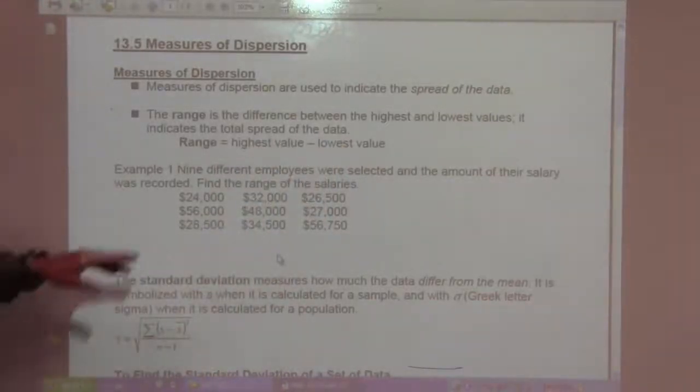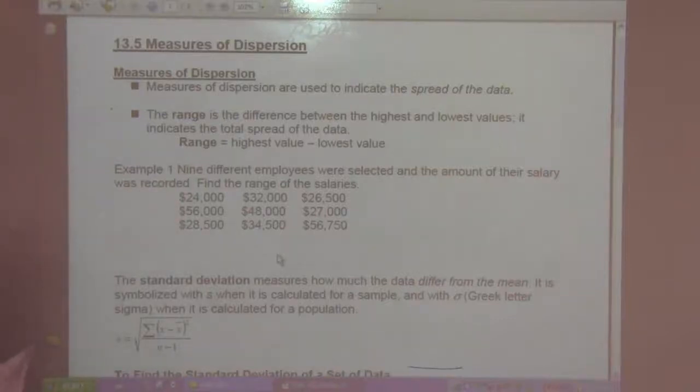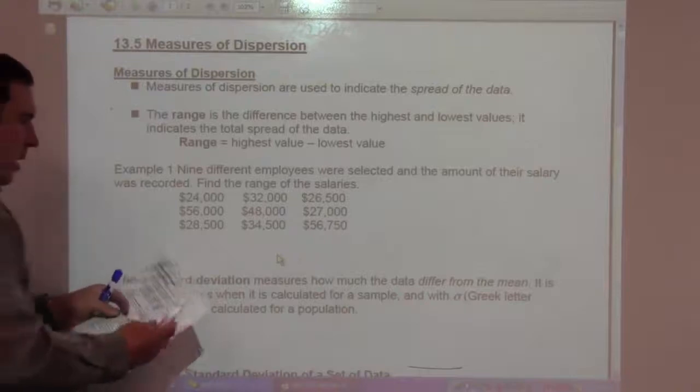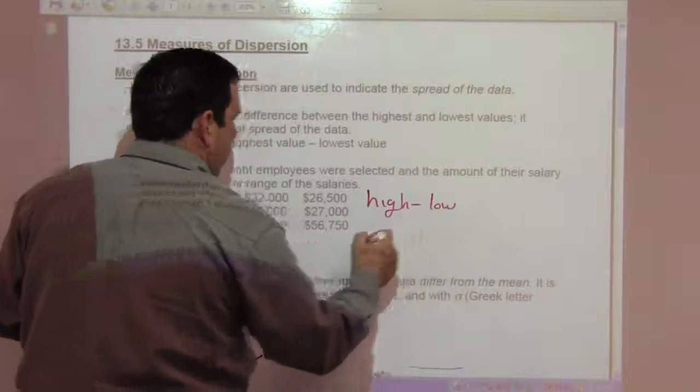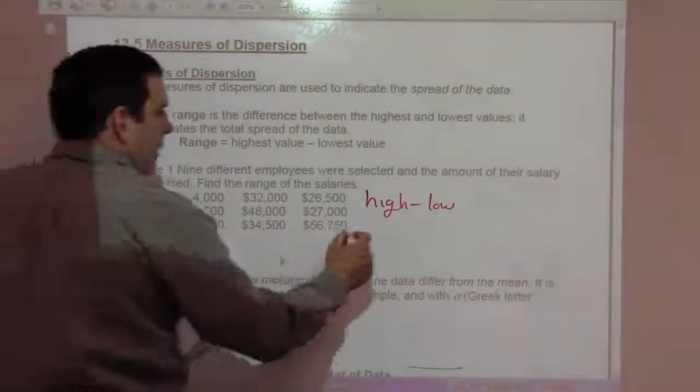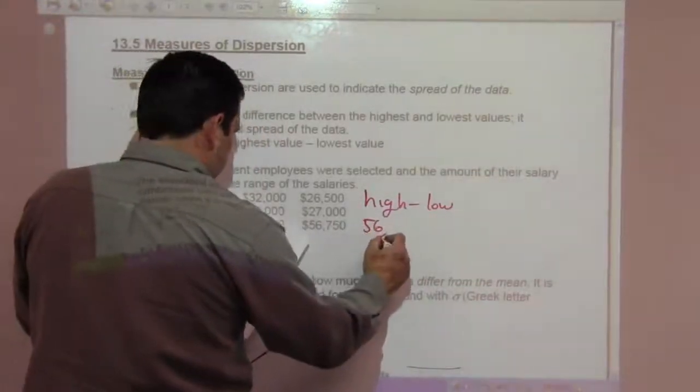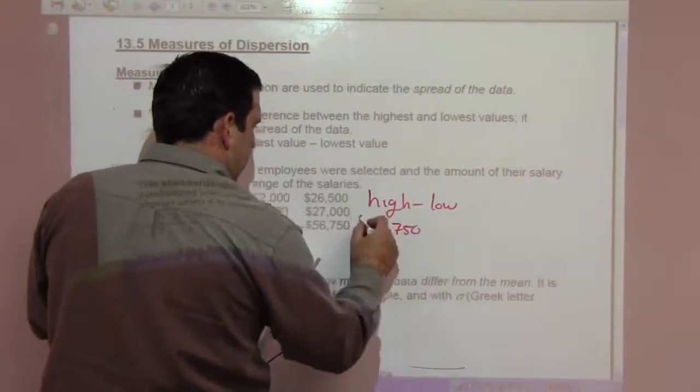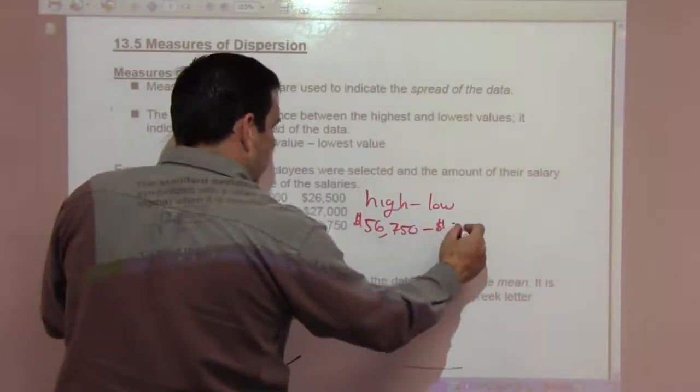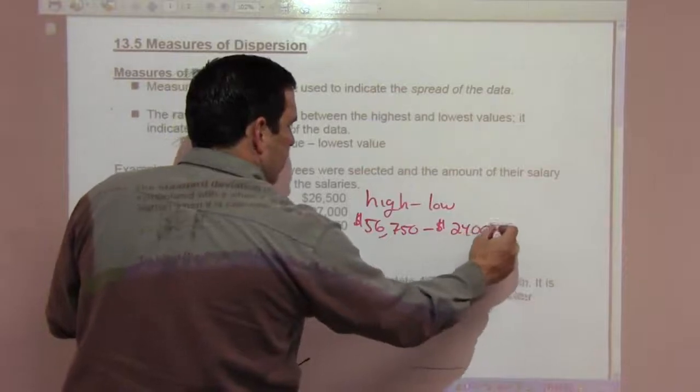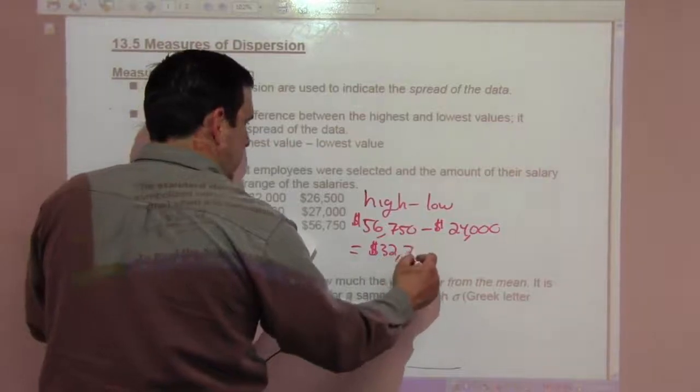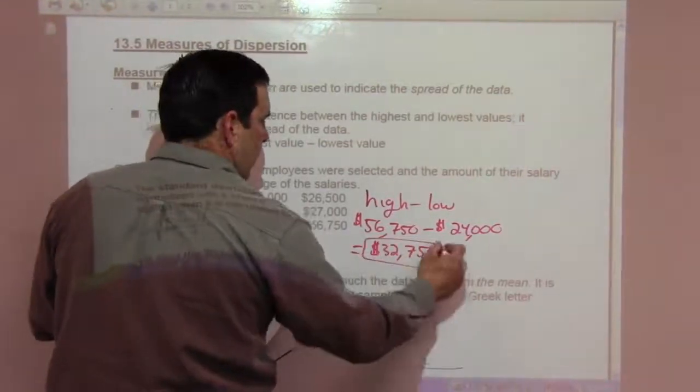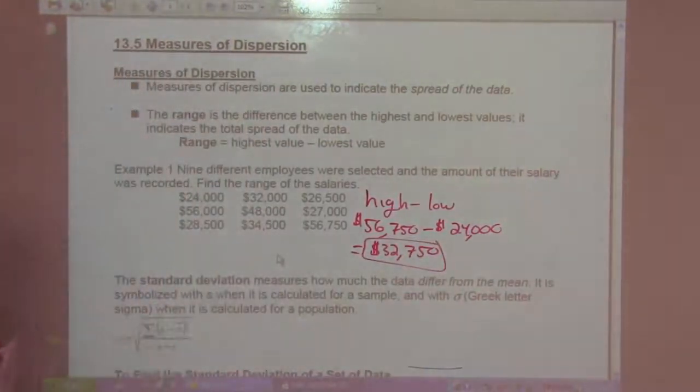Example one: nine different employees were selected and the amount of their salary was recorded. Find the range of their salaries. The high value was $56,750. The low value is $24,000. And that's going to be $32,750. That's the range of the data, of the salaries.